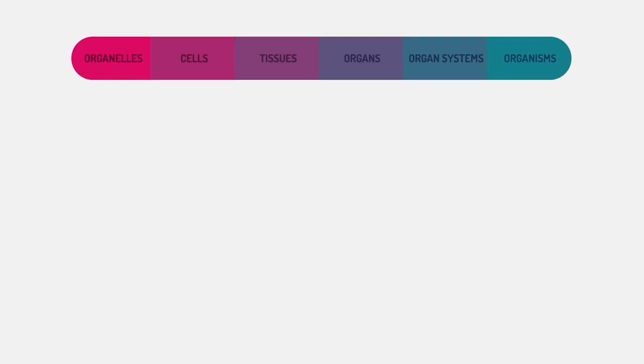look at the levels of organization in organisms, from smaller than cells to bigger than organs. In unicellular organisms, the single cell performs all life functions. However, multicellular organisms have various levels of organization within them.